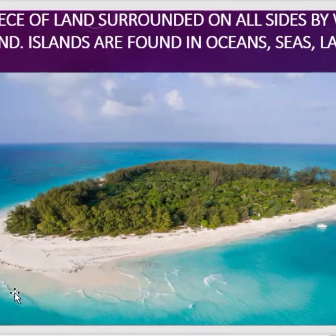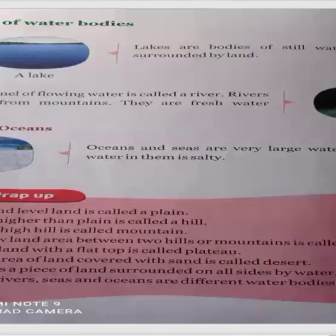Islands are found in oceans, seas, lakes and rivers — any types of water bodies. Water bodies are known as river, ocean, sea, and lake.